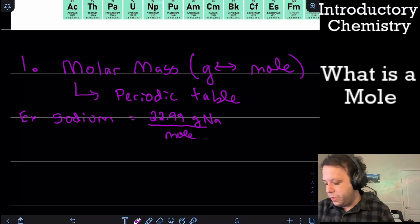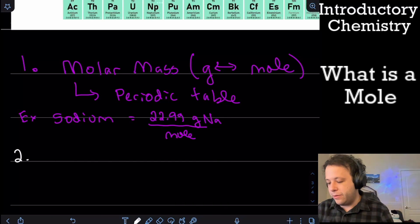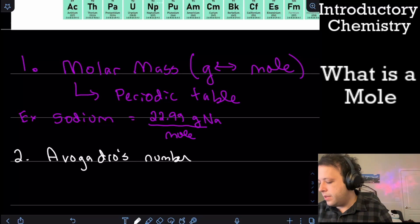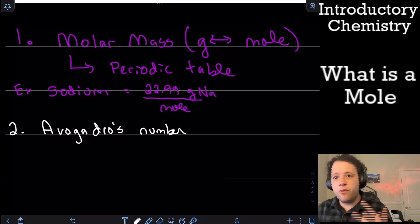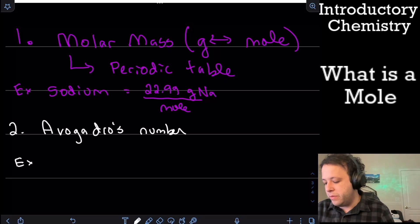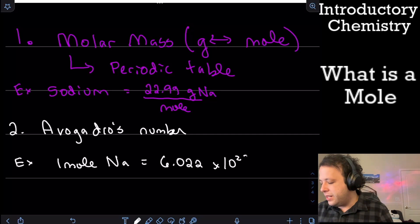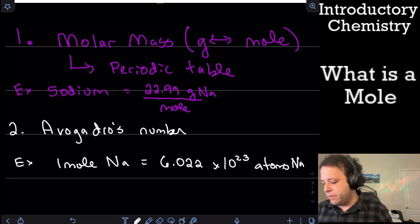The second conversion is Avogadro's number. For any mole you have — continuing our sodium example — one mole of sodium is equal to 6.022 times 10 to the 23 atoms of sodium.